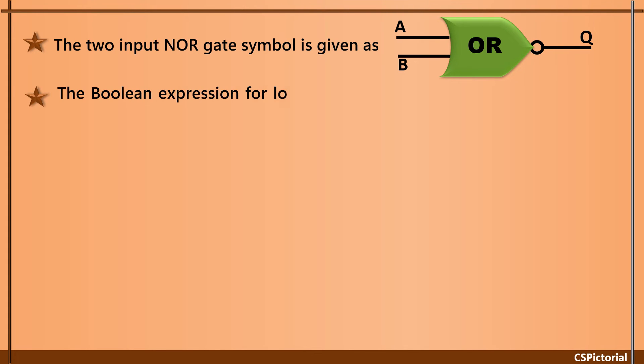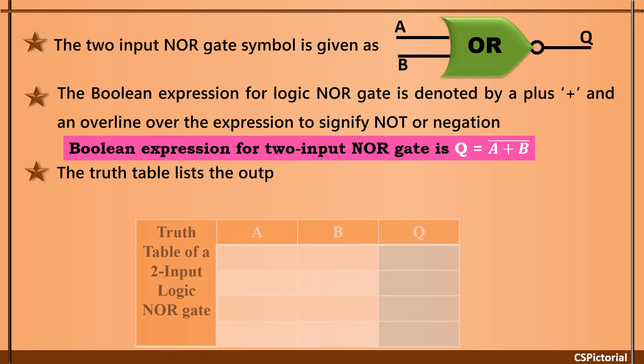The two-input NOR gate is given as a symbol whose shape is that of a standard OR gate with a circle called an inversion bubble at its output to represent the negation of output. The boolean expression is denoted by a plus sign and an overline as A plus B bar.